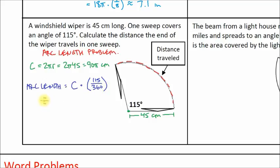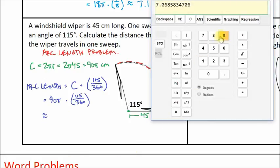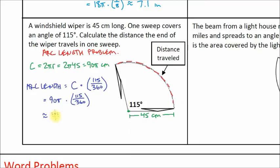All right, let's go ahead and figure this out. So arc length is equal to 90π times 115 degrees out of 360 degrees. And let's put that in our calculator: 90π times 115 divided by 360. And we've got 11.78, so 11.8, approximately 11.8 centimeters.